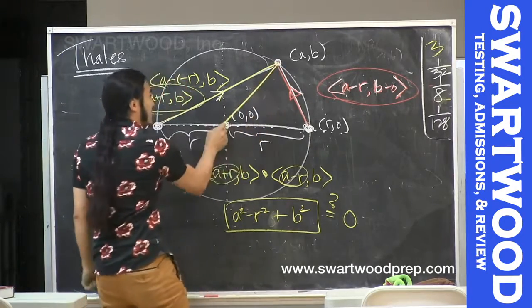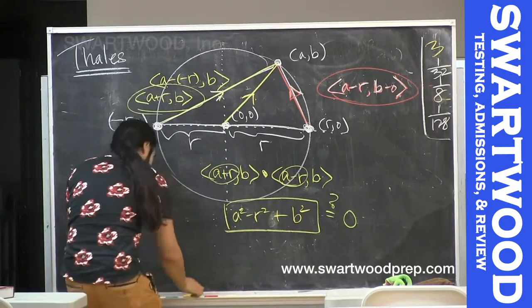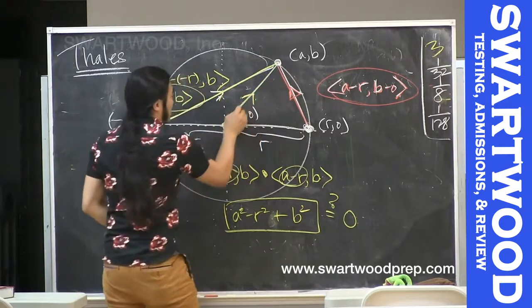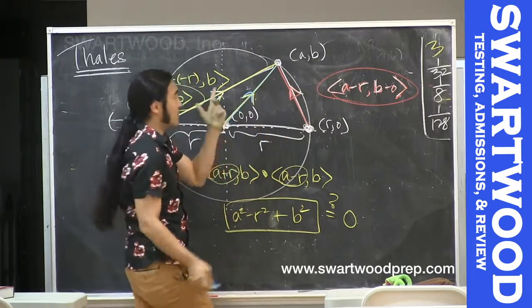I think one other thing is we've got one more radius, let's take this one. This vector, let's rename him, let's make him the blue vector. Actually let's call him, well this is easy, A and B, zero and zero, so I guess this vector is A comma B.